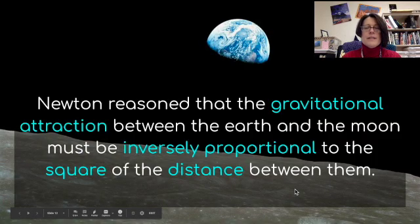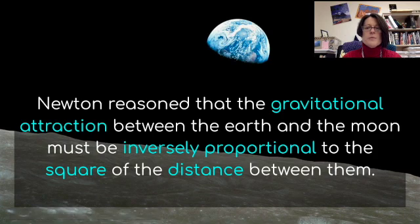Newton reasoned that the gravitational attraction between the earth and the moon must be inversely proportional to the square of the distance between them.